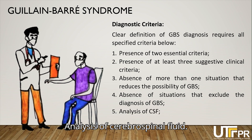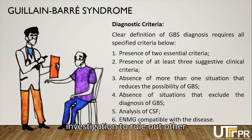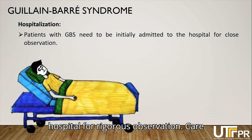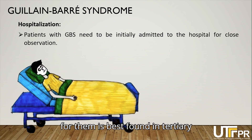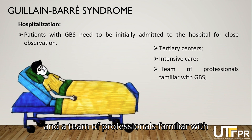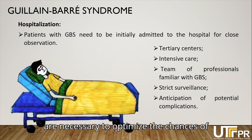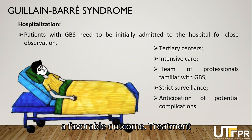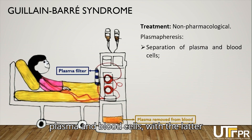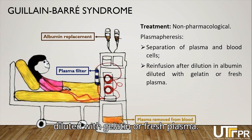Analysis of cerebrospinal fluid, electroneuromiography compatible with the disease, and thorough additional investigation to rule out other etiologies are required. With a positive result for Guillabar Syndrome, patients need to be initially admitted to the hospital for rigorous observation. Care is best found in tertiary centers with intensive care facilities and a team of professionals familiar with the special needs of these patients. Strict surveillance and anticipation of potential complications are necessary to optimize chances of a favorable outcome.